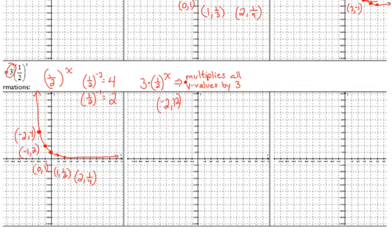The point negative 1, 2 becomes negative 1, 6 after multiplying y by 3. The point (0, 1) becomes (0, 3). The point (1, one-half) becomes (1, three-halves), or 1 and one-half. When we multiply one-fourth by 3, we get three-fourths, giving us the point (2, three-fourths). Connect the dots.